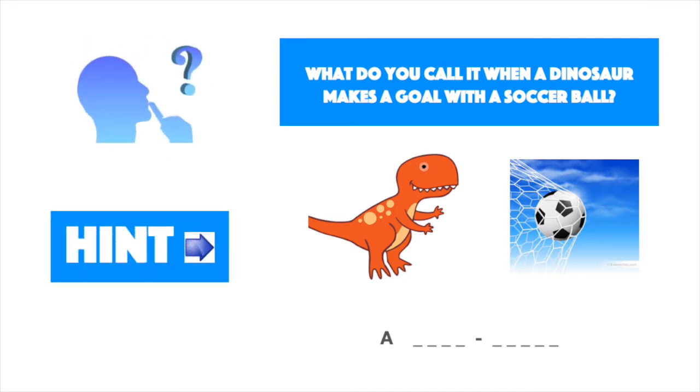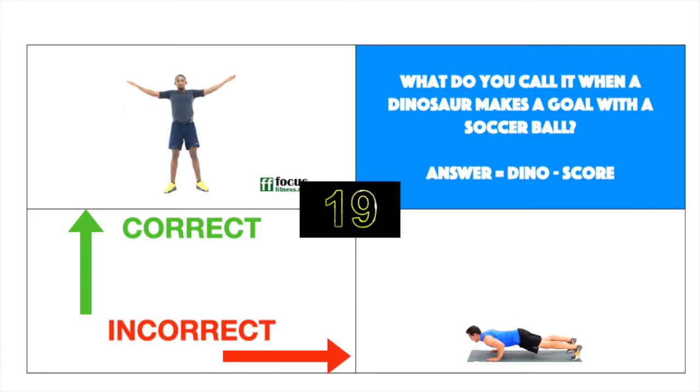What do you call it when a dinosaur makes a goal with a soccer ball? Answer, a dino score. Correct, do arm circles. Incorrect, do burpees.